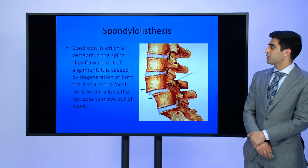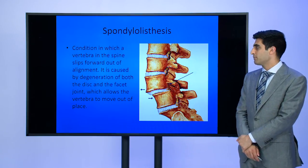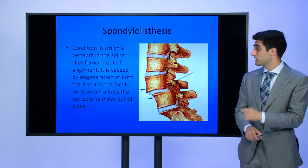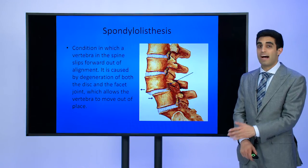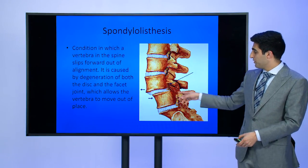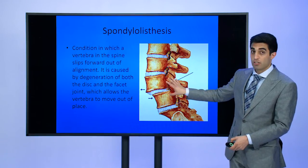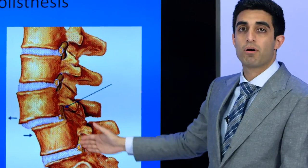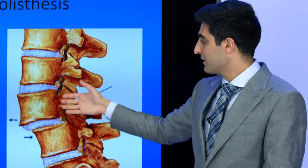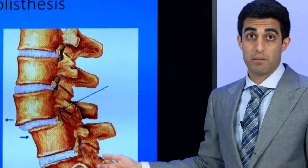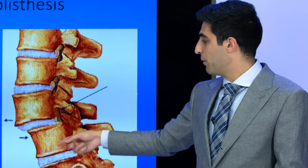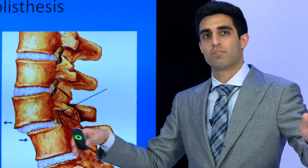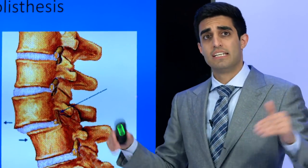Spondylolisthesis is a condition in which the vertebrae in the spine slip forward out of alignment, caused by degeneration of both the disc and the joints that hold the bones together. This allows the vertebrae to move in and out of place. A bone may slip forward up to a centimeter or more on the bone below it, causing significant compression for the nerves as they exit the dura and travel down the legs.